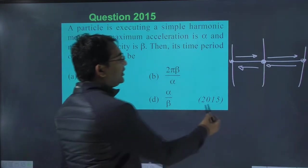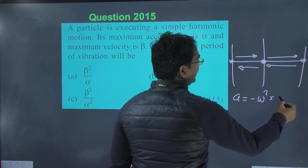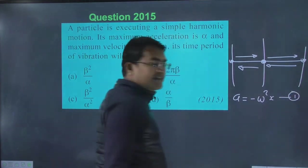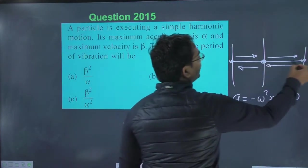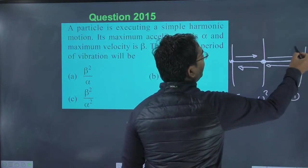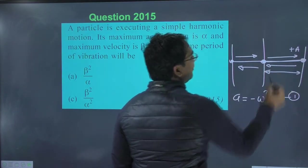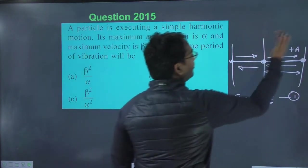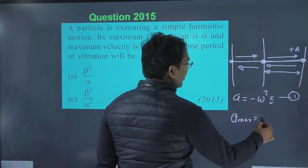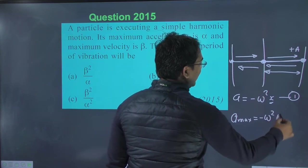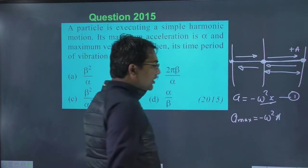Acceleration position dependent lag do. To, a is equal to minus omega square x. This is the acceleration. Ab acceleration maximum kab hoga. Jab position maximum hoga. Jab extreme position yahan par hoga. Plus a. Yeh wala displacement amplitude hai. Maximum displacement from the mean position. To acceleration jab maximum ki value aa jayegi, minus omega square a. Acceleration minimum kab hoga. Zero. Jab x ki value zero hogi.